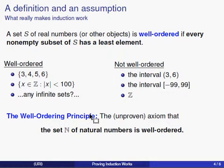It certainly seems true—nobody has been able to point to a subset of the natural numbers and say it has no smallest element. But you can't really prove it from the other axioms we normally assume about positive integers. So we're going to take it as an axiom, called the well-ordering principle, which says: the set N of all natural numbers is well ordered.